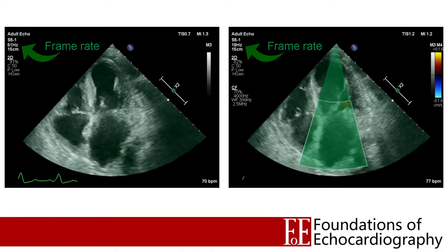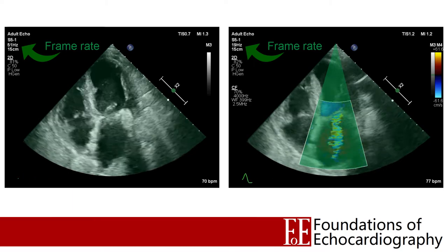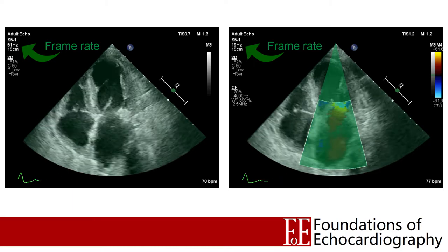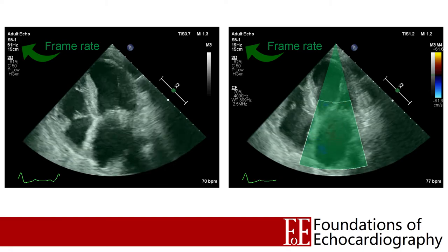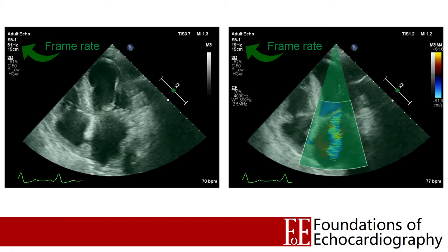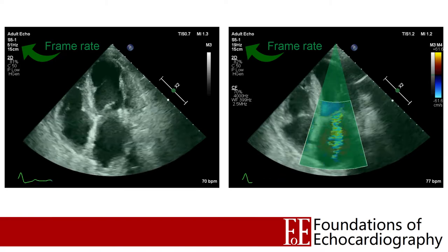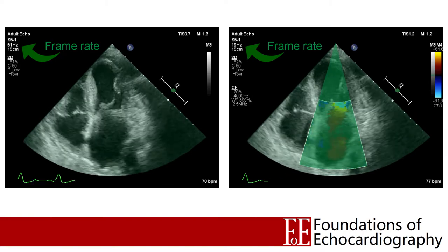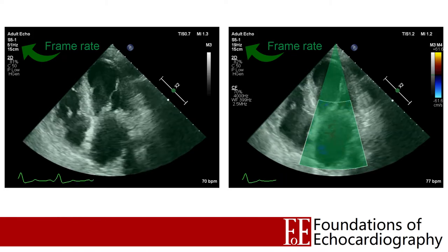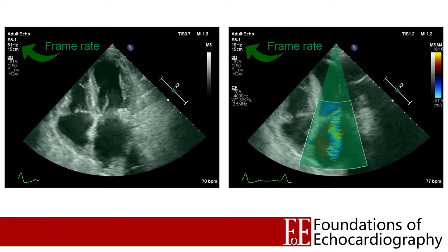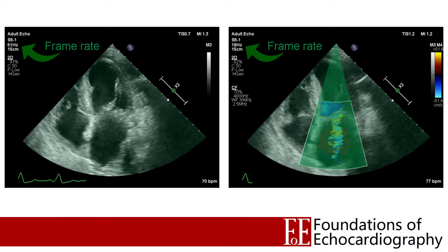The dark green box overlies not only the area we're asking for colour information, but also all of the foreground in front of that box — because we can't send ultrasound down to those deep structures without passing through the near structures first. So adding colour to your 2D image is going to significantly reduce your frame rate. The biggest determinants of how much your frame rate will decrease are the width of the colour box, which determines how many lines are involved, and the maximum depth of the colour box, as that dictates how long the ultrasound machine needs to wait before it can send out the next pulse of energy.